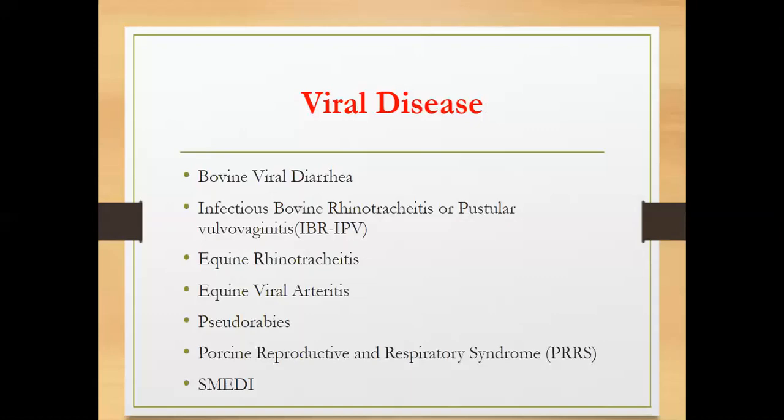We also have infectious bovine rhinotracheitis, or pustular vulvovaginitis, which again affects cattle and causes abortion in the second half of gestation. Another is equine rhinotracheitis, caused by equine herpes virus 1, which causes abortion in the last trimester. Then we have equine viral arteritis, also known as epizootic cellulitis — common name pink eye — caused by the equine arteritis virus, affecting horses and causing abortion in the second half of gestation.